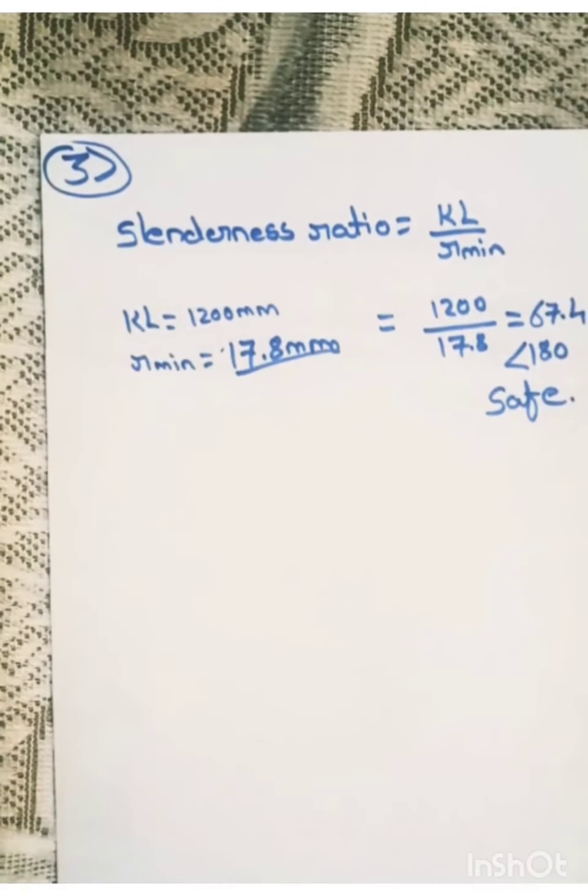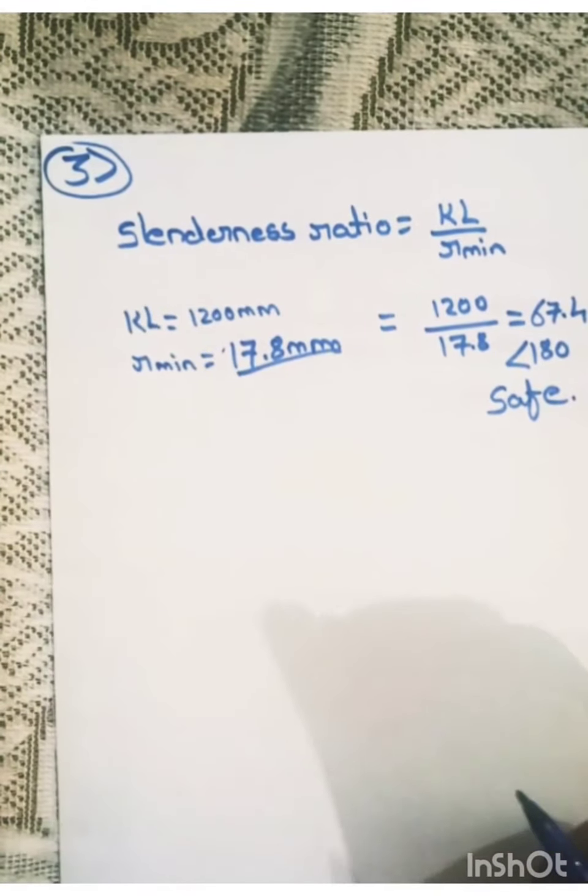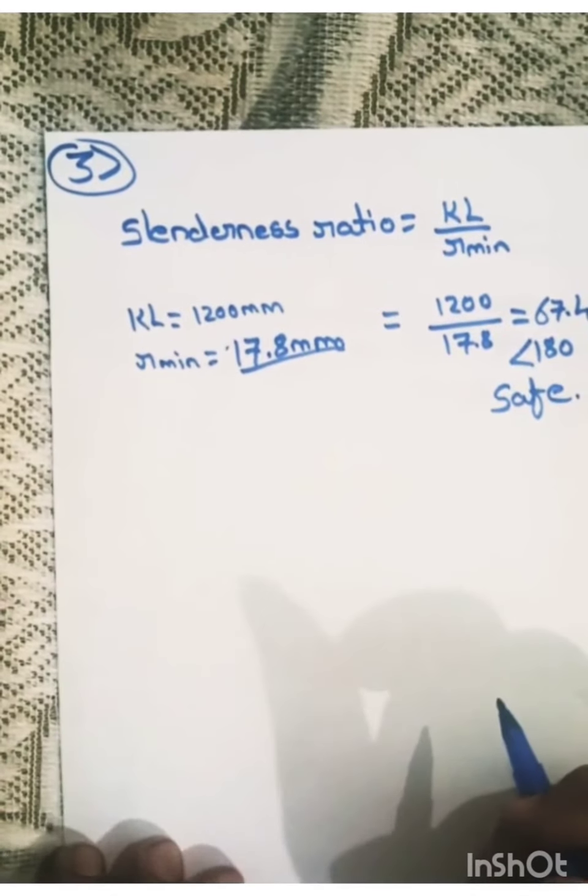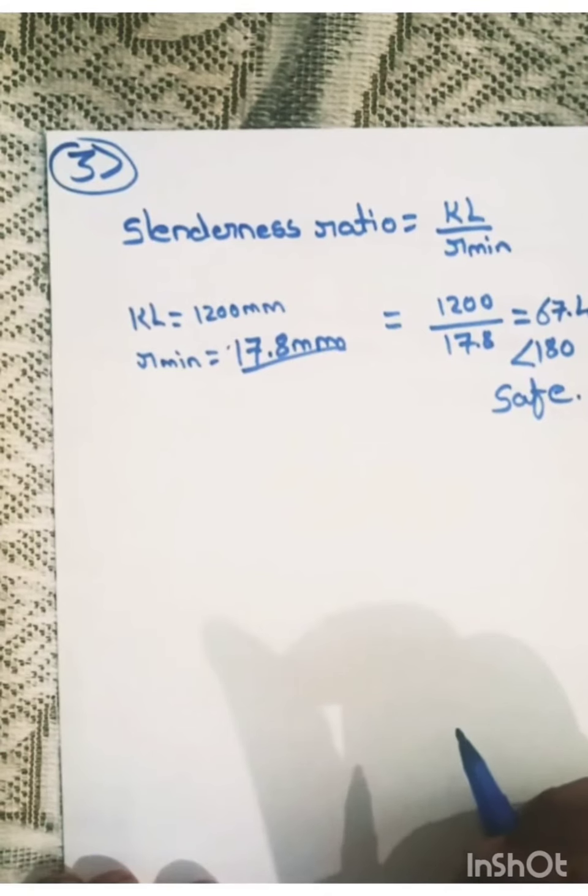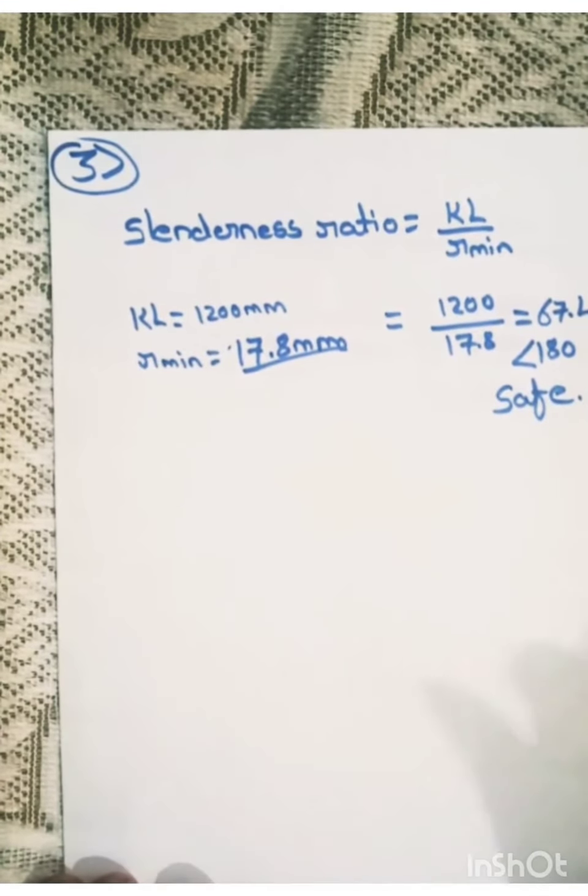So now let us check its capacity in compression. For that, we need to use table number 9. We will not be using the formulas because that will be lengthy. So we will directly use the table which are given in IS800.